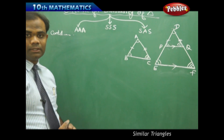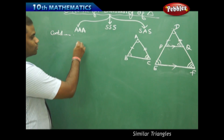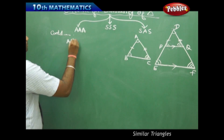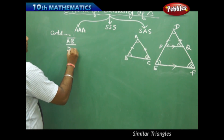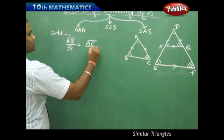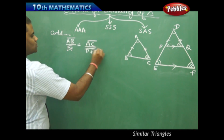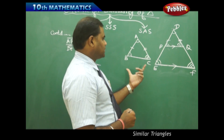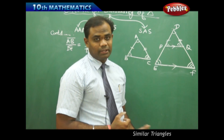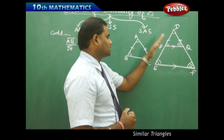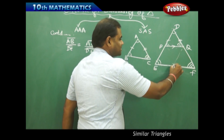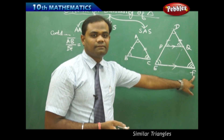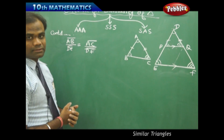Continuing from the theorem, I interchange the numerators and denominators of the ratios which have been obtained, so that I get AB by DE equal to AC by DF. Similarly, the third side will also be in the same ratio because if I take the same parallel property and draw a parallel line and use similar properties, I can show that BC by EF is equal to the three fractions.